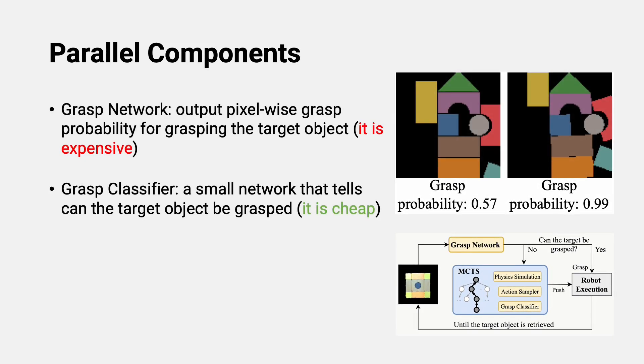The grasp network is needed for evaluating whether to perform the final retrieval. On the other hand, the MCTS process also needs to estimate grasp probabilities to decide whether a simulation thread should end. This is realized using a simpler and faster grasp classifier.